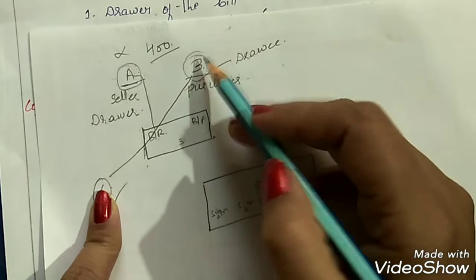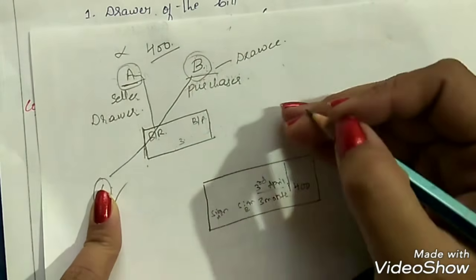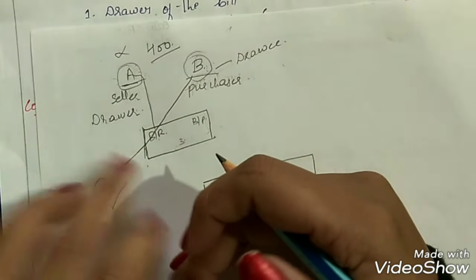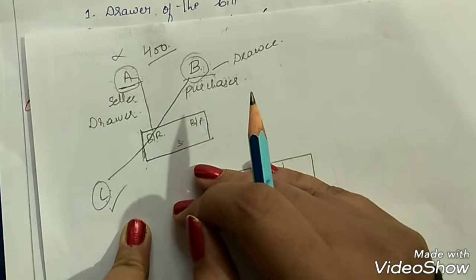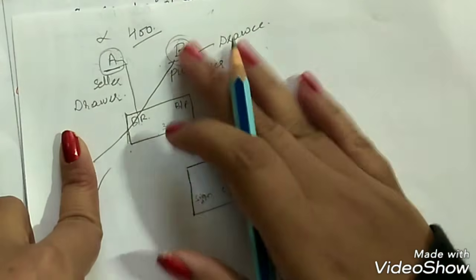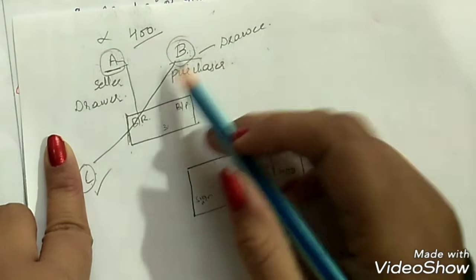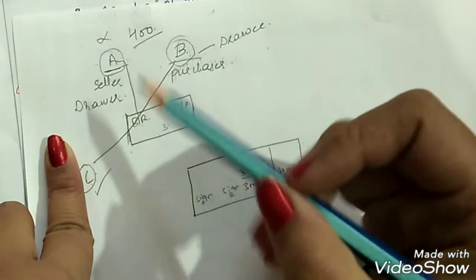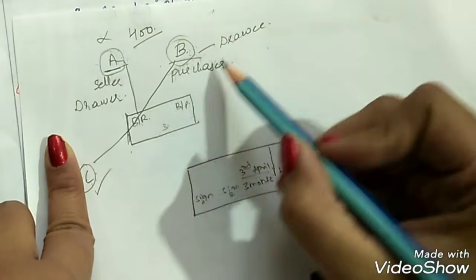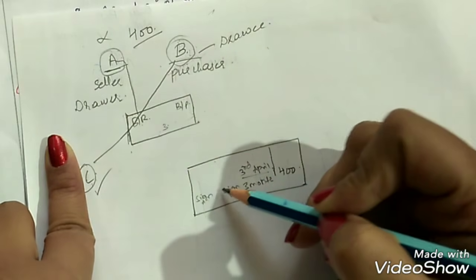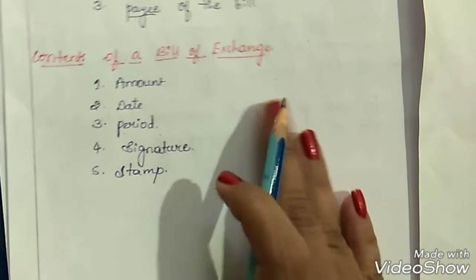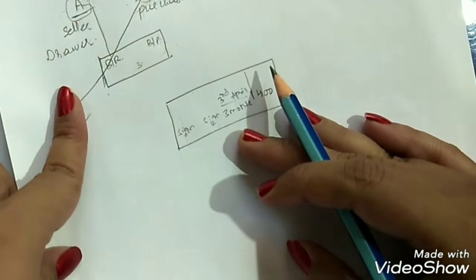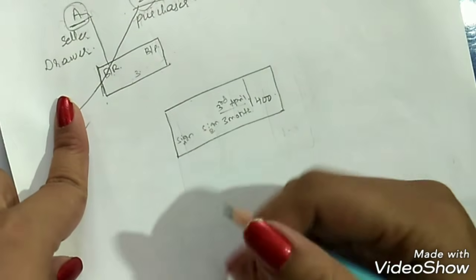Fourth is the signature. Signatures from both parties must be on the bill of exchange — a sign from A and a sign from B. For example, if A draws the bill on B but B does not agree or give his consent, this cannot be called a bill — it will just be a draft. Only when B agrees and signs does it become a valid bill.